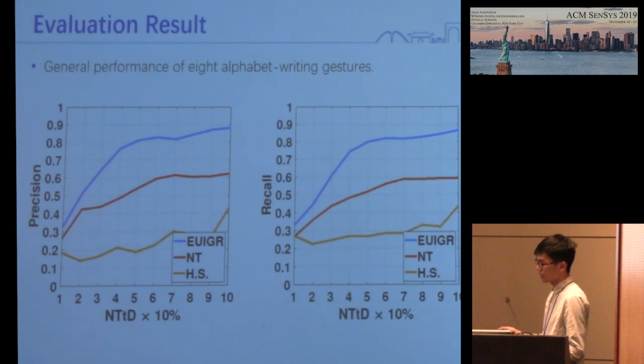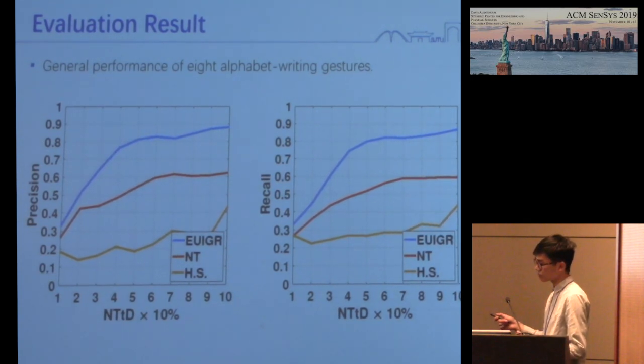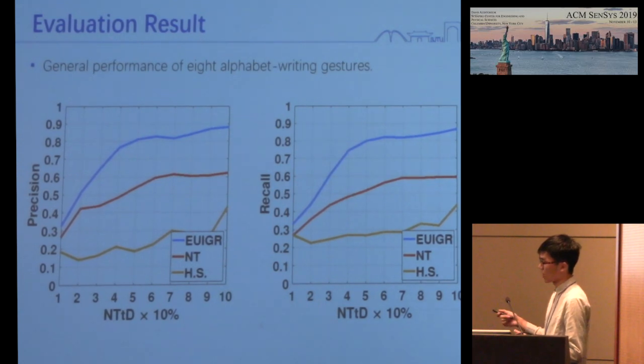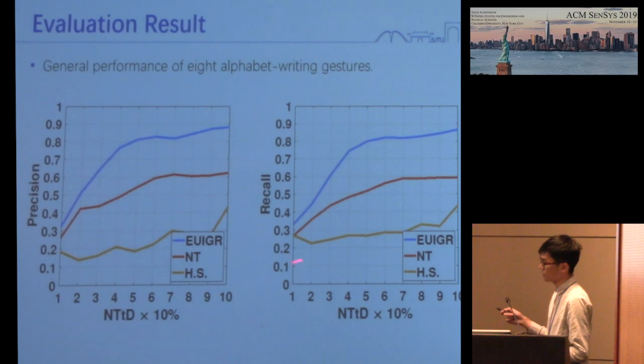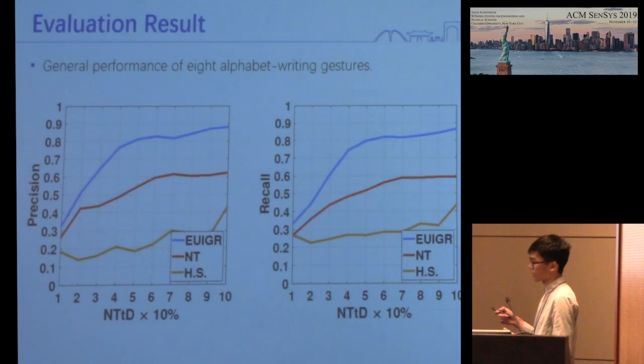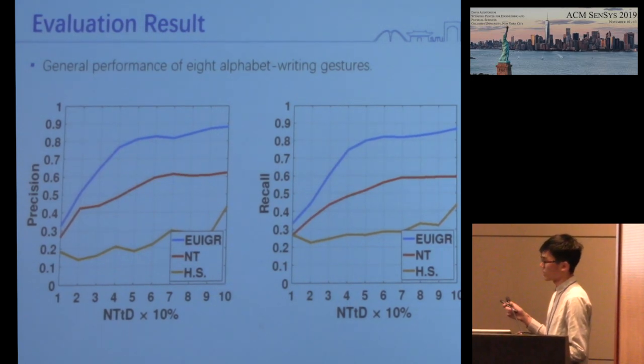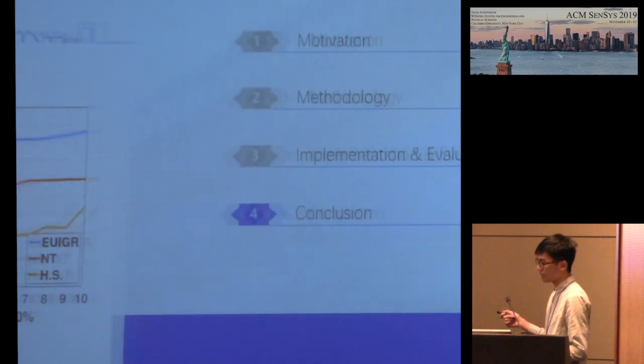The comparative evaluation with competitive methods is carried out, and EUIGR also attains average precision and recall higher than 85% in untrained environments.